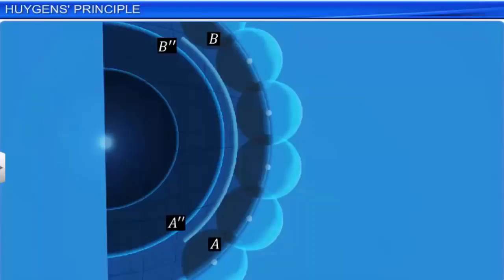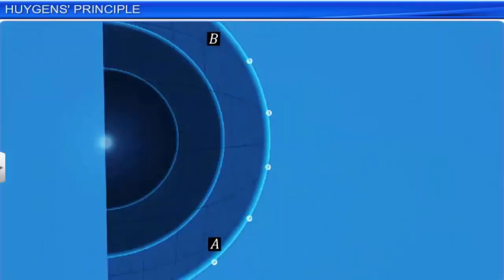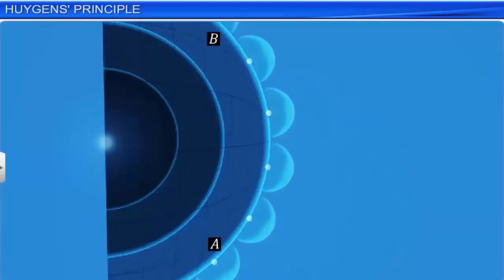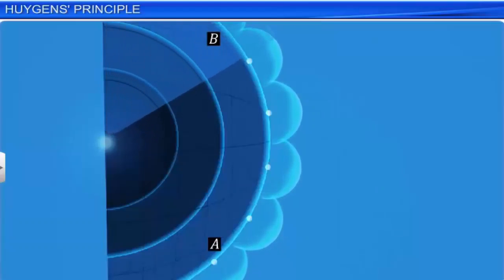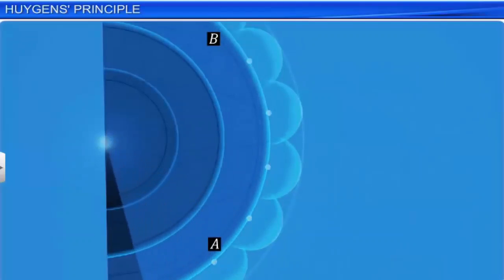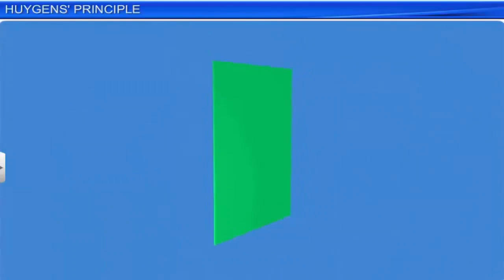But experimental results do not show the presence of any such back wave. In order to explain this, Huygens proposed that the intensity of the spherical wavelets is not uniform in all directions, but is maximum in the forward direction and zero in the backward direction. Hence, the wavelets as well as the whole wave always propagate in the forward direction only. Now let us use Huygens principle to find the location and shape of a plane wave front at a later instant of time t. Let AB be a plane wave front at time t equal to zero.